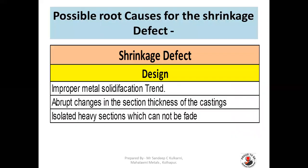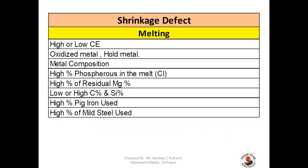Now we are going to see possible root causes for shrinkage defect, process-wise. First, in Design: number one is improper metal solidification trend. Abrupt changes in the section thickness of the casting can cause shrinkage defects. Isolated heavy sections which cannot be fed will also cause shrinkage defects. These are basically design-prone causes for shrinkage.